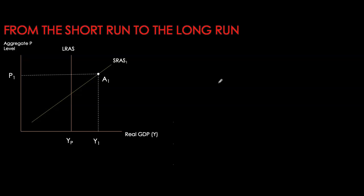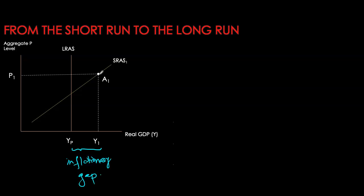Let's assume for now that we are at a point where we're producing above our potential. Whenever an economy produces above its potential, it's overheating its resources. So we are using our land, labor, and capital and other factors of production above their capacity. This type of output gap is referred to as an inflationary gap.